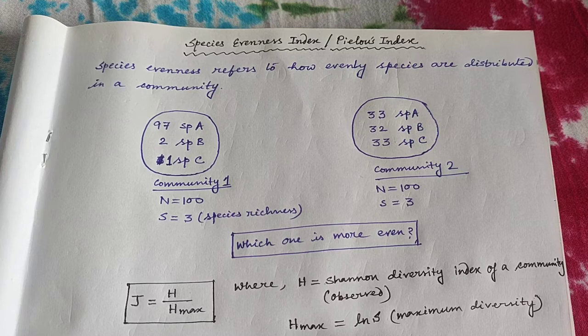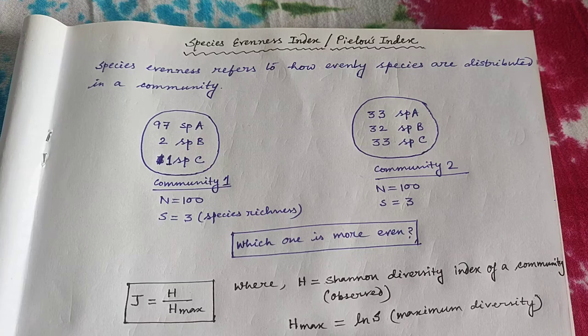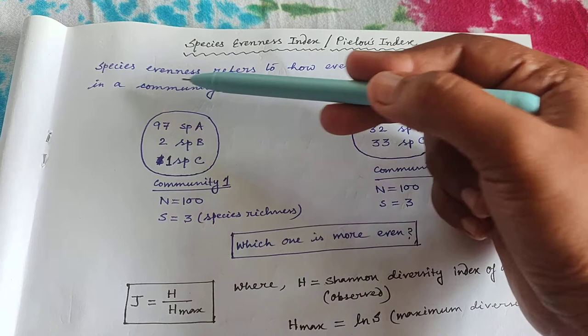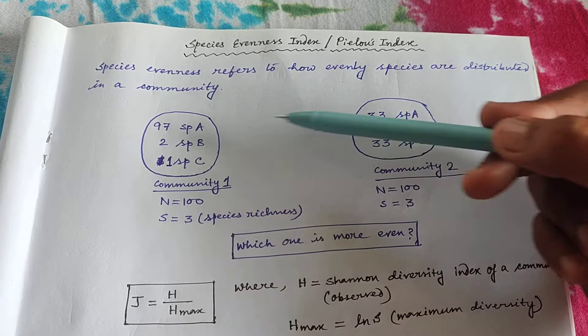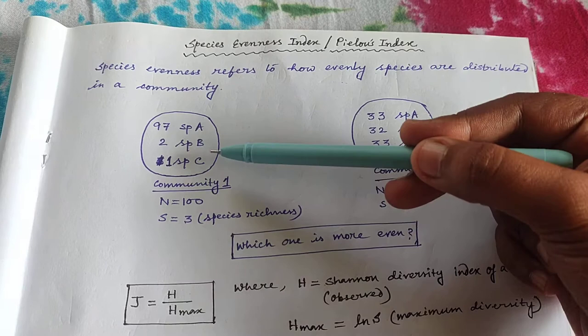So what is species evenness? Species evenness refers to how evenly species are distributed in a community. I have drawn two communities here — community 1 and community 2. Both have the same species richness, that is S equals 3 for both communities.